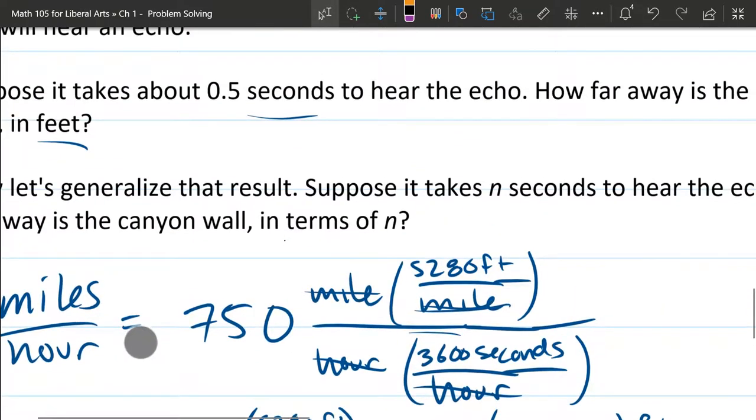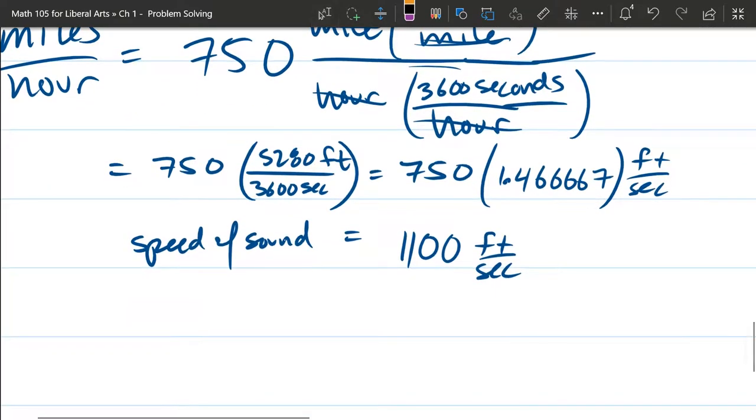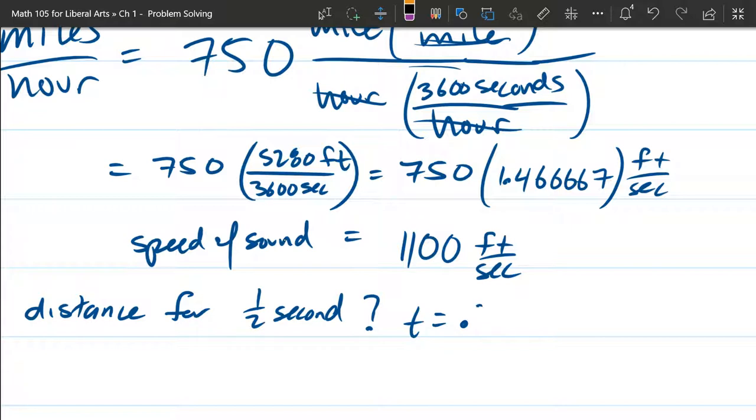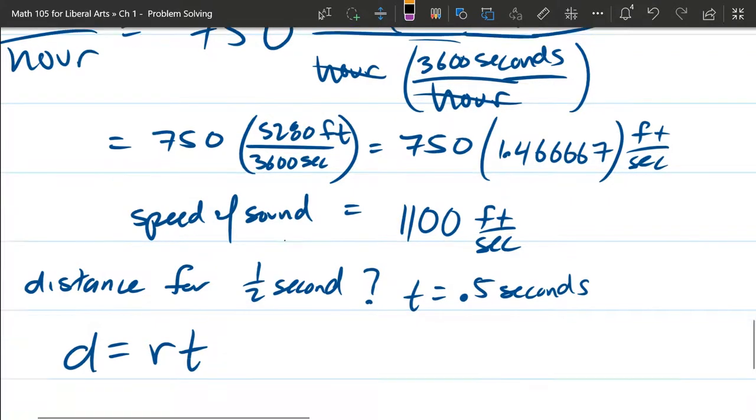My time was 0.5 seconds. So we want to have a distance for one half second. So I could write down t equals, I like to use decimals, especially when I'm using calculators. So I'm going to go with 0.5 seconds. There's the distance equals rate times time, d equals rt.